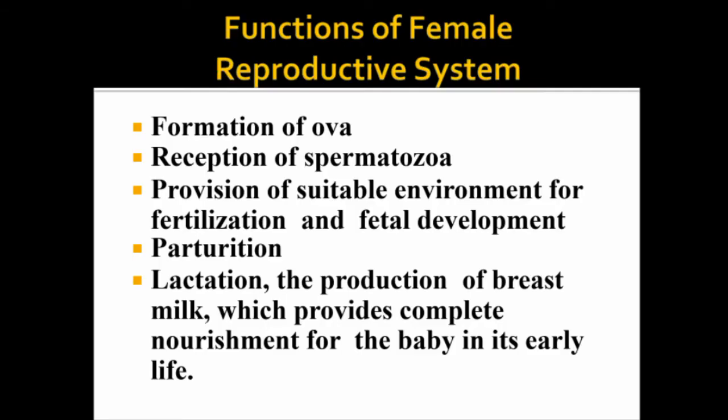The functions of the female reproductive system: first, the reception of the spermatozoa, the provision of suitable environment for fertilization and fetal development. It is also a process of lactation.